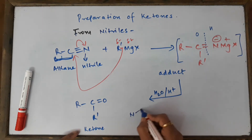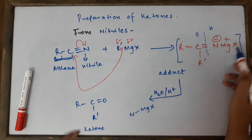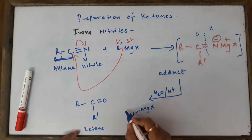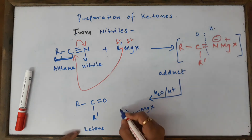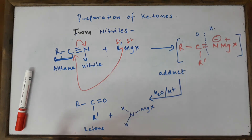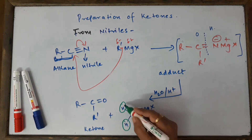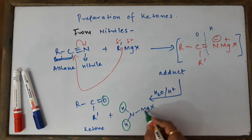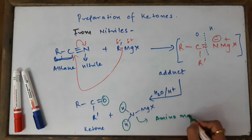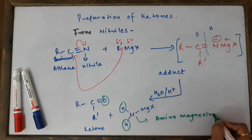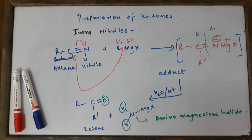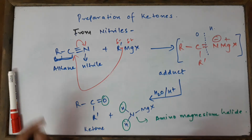From the right side, we get NH₂MgX — amino magnesium halide. The double bonds are converted to single bonds and hydrogen from water attaches. Water has given 2H and 1 oxygen. Naming is not important here, but let's write: amino magnesium halide. If you know the names, write them in the exam; if not, just leave them and don't write wrong names.